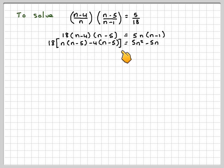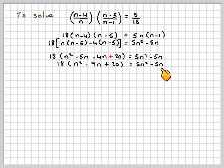This side will become 5n squared minus 5n. Just dealing with the inner bracket first, we're going to have 18, then we're going to have n squared minus 5n minus 4n plus 20. It's equal to 5n squared minus 5n. We now collect the two like terms together. So we get n squared minus 9n plus 20. Still got the 18 there. And we've still got 5n squared minus 5n.